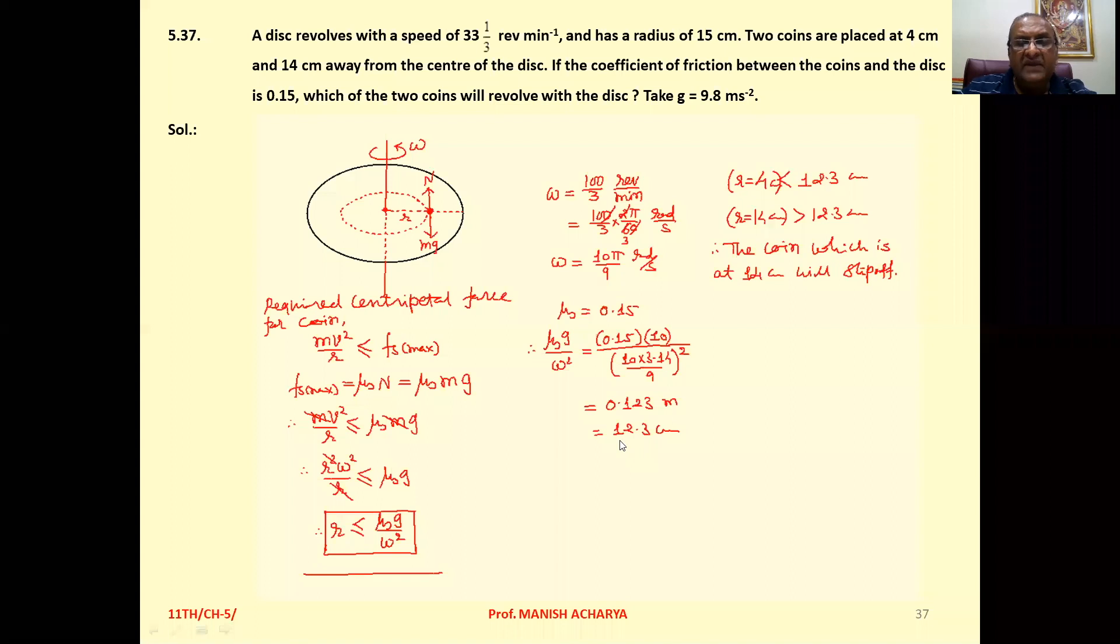See, this particular equation r, that is less than or equal to μₛ g upon ω². So we can say this is the condition for the coin to remain on the disk. If this condition is not satisfied, then the coin will slip off. Now we calculated μₛ g upon ω², that is 12.3 centimeter.